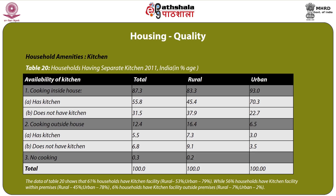Table 20 covers households having a separate kitchen in 2011. Categories include cooking inside house with kitchen, cooking inside house without kitchen, cooking outside house with kitchen, cooking outside house without kitchen, and no cooking. Overall, 61 percent of households have kitchen facility (rural 53 percent, urban 79 percent), while 56 percent have kitchen facility within premises (rural 45 percent, urban 78 percent). About 6 percent of households have kitchen facility outside premises (rural 7 percent, urban 2 percent).